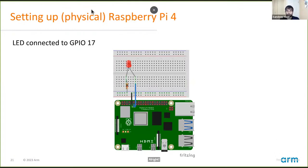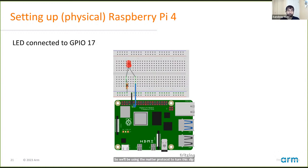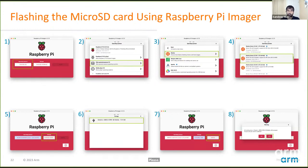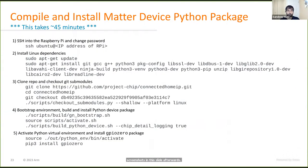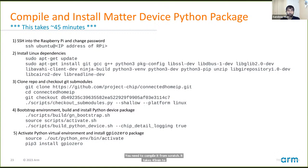Thanks Nathan. As I mentioned, I have a Raspberry Pi 4 on my desk with a breadboard and an LED connected to GPIO 17. We'll be using the Matter protocol to turn this LED on and off. I've already set up the Raspberry Pi's SD card with Ubuntu Server 22.04, the 64-bit edition — this takes a few minutes. For the Matter device Python package, you currently need to compile it from scratch, which takes 45 minutes, so I've already done that. You can try these steps yourself later using the screenshots in the slides.